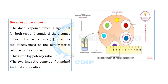One terminology related to this method is the dose-response curve. The dose-response curve is sigmoidal for both the test and standard preparations. The distance between the two curves, measured along the axis, indicates the effectiveness of the test material relative to the standard — this is the log potency ratio. The two lines coincide if the standard and test are identical.